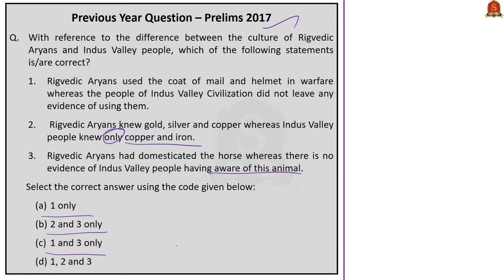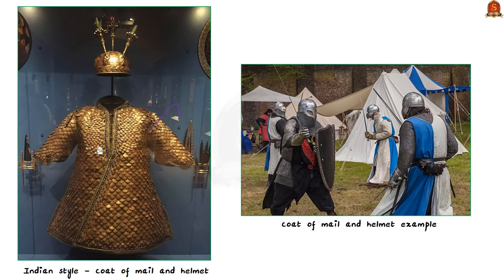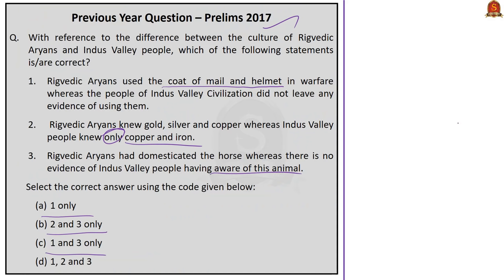Looking at the first statement: the coat of mail is used during warfare to protect the soldier from injuries. Both the Indian style and Western examples of coat of mail and helmet exist, each with their own style. The first statement is correct because Rig Vedic Aryans used the coat of mail and helmet in warfare whereas the people of Indus Valley civilization did not leave any evidence of using them. Now coming to the second statement.